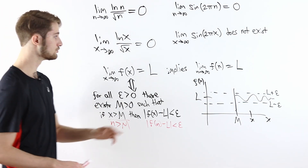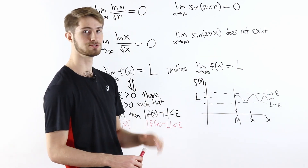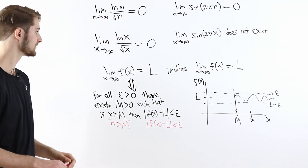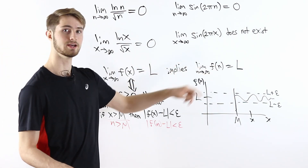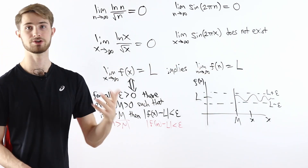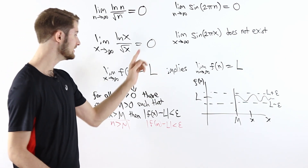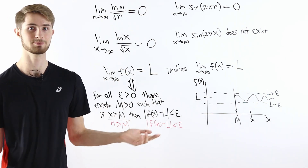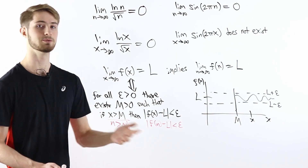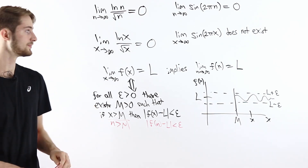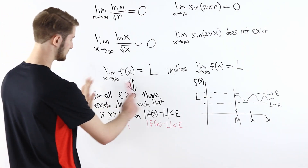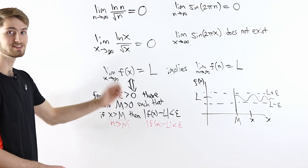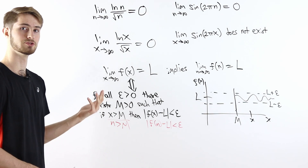This also explains why knowing the limit as N goes to infinity does not tell us the limit as x goes to infinity. The proof works because every integer is also a real number, but not every real number is an integer — for example, 1.5 is a real number that's not an integer. So if the epsilon-delta definition holds for N being an integer, that doesn't tell us it also holds for real numbers.